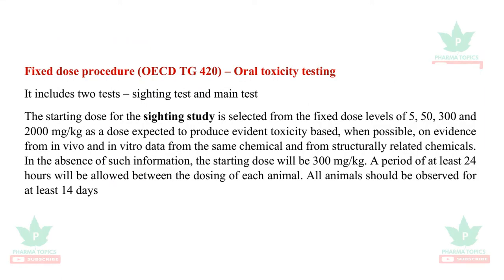The fixed dose procedure, guideline 420, involves two tests: a sighting test and a main test. The sighting test involves testing at fixed dose levels — it may be 5, 50, 300 or 2000 mg/kg — when possible on the basis of available in vivo or in vitro data. In the absence of such information, the dose will be 300 mg/kg. From this study, one dose will be selected for the main study. A period of at least 24 hours will be allowed and animals will be observed for 14 days.